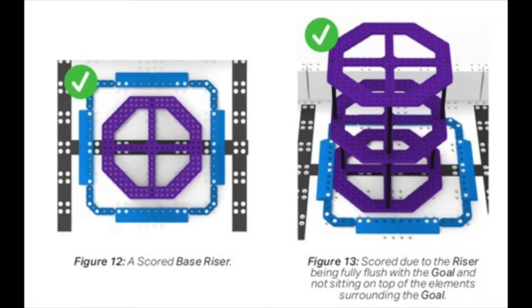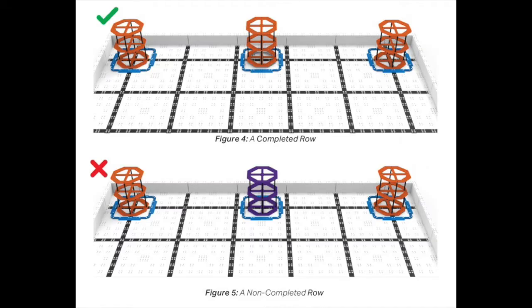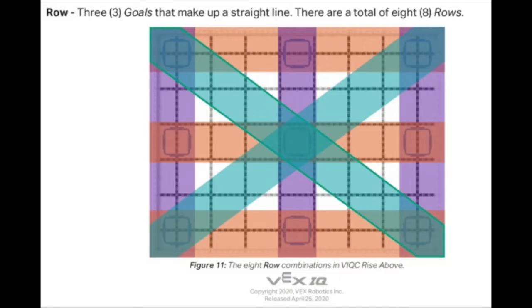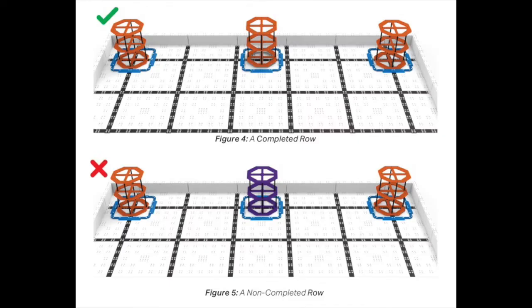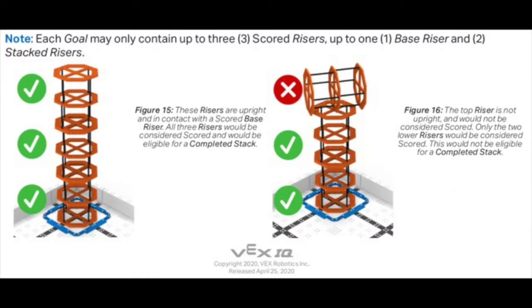To get a completed row score, you need to have three goals in a line vertically, horizontally, or diagonally, all with the same colored riser in each goal. No other colors are allowed.